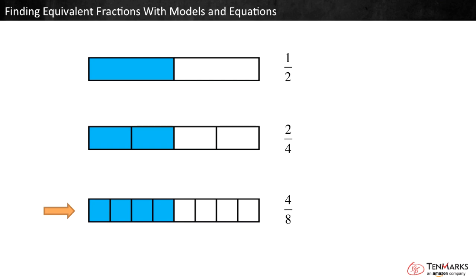This makes sense. Fourths are smaller than halves, so it takes more fourths to equal the same area. Eighths are even smaller, so even more eighths are needed.